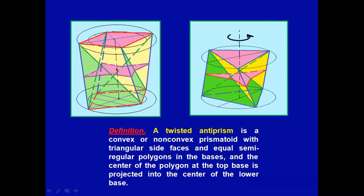Next, a twisted antiprism is a convex or non-convex prismatoid with triangular side faces and equal semi-regular polygons in the bases. And the center of the polygon at the top base is projected into the center of the lower base.